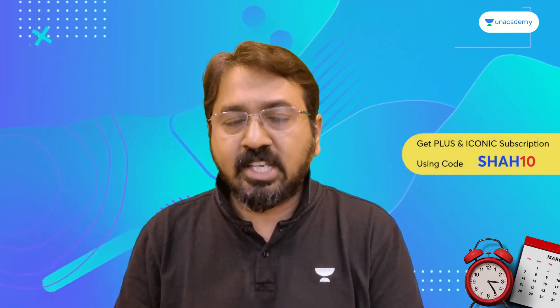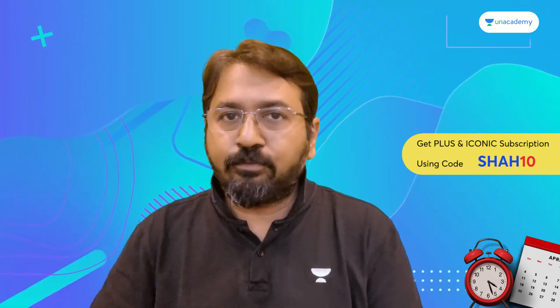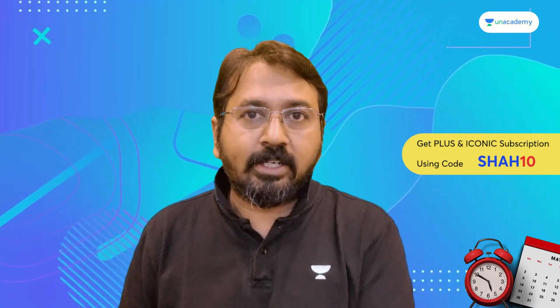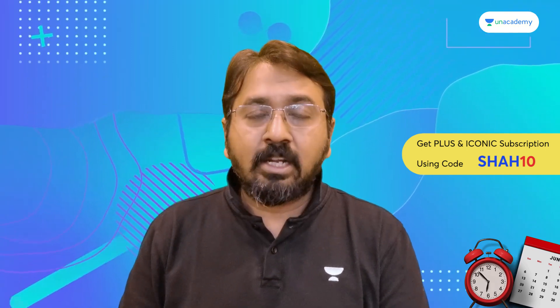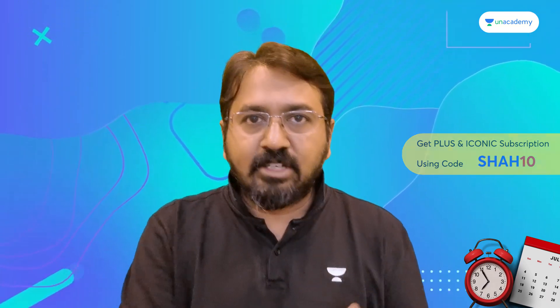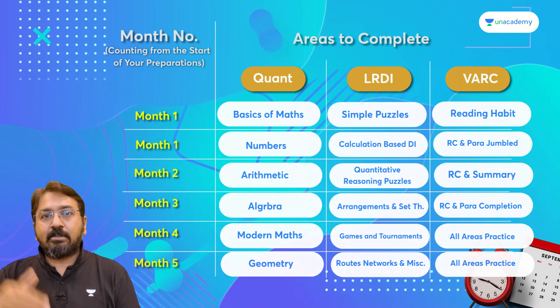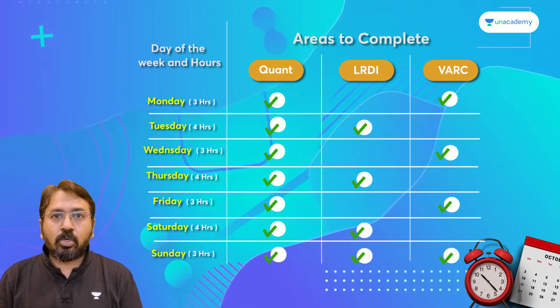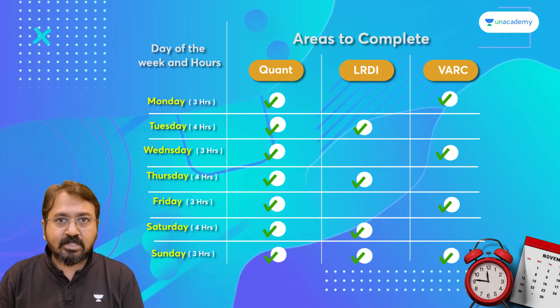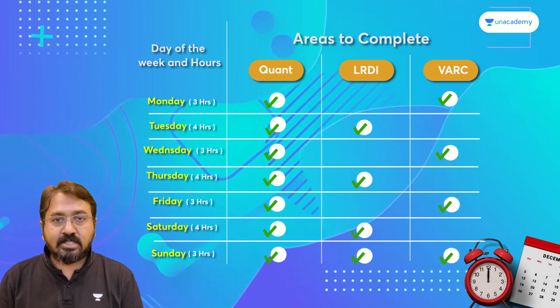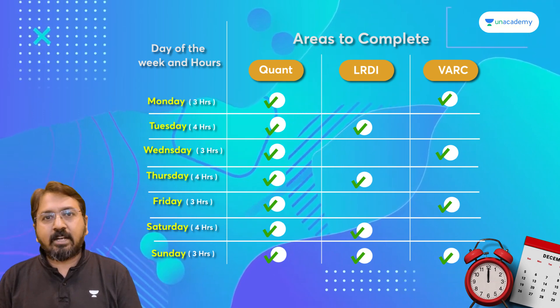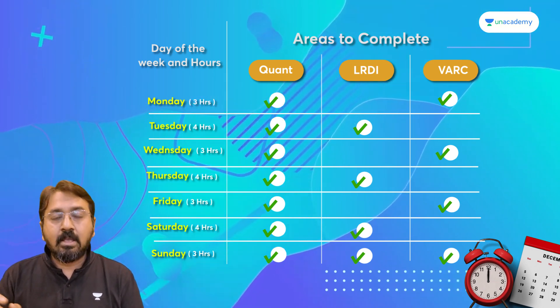For someone who is pursuing graduation, I'm assuming you have about six to seven hours of college — say from 9 a.m. to 4 p.m. — leaving you about five to six hours of quality time for CAT and other studies. The month-wise timetable displayed on the screen will help you complete your syllabus in about five months. For the day-wise timetable, you can devote about two to three hours every day from Monday to Saturday for the Quantitative Aptitude section, which includes attending sessions and practising questions.